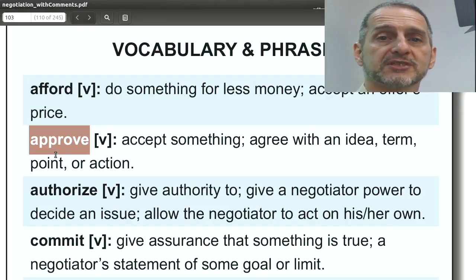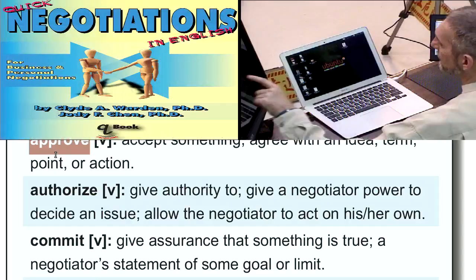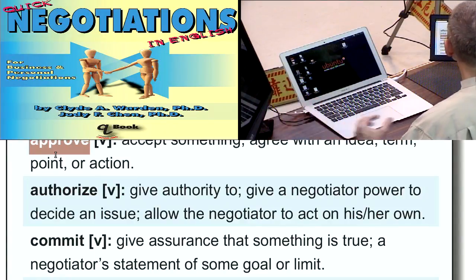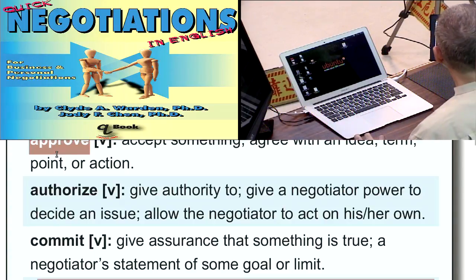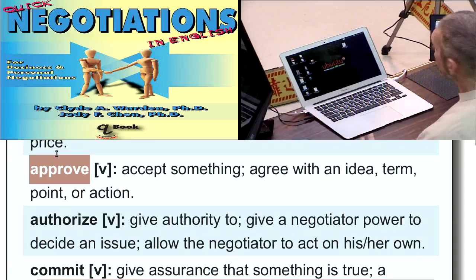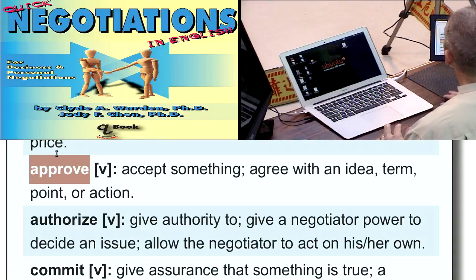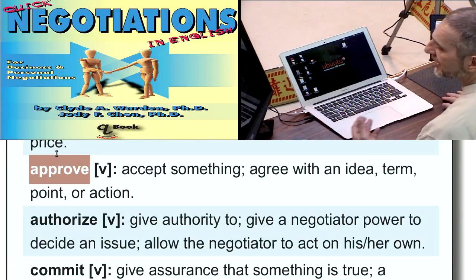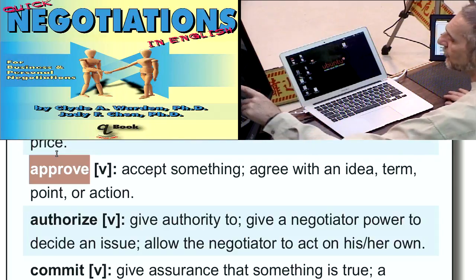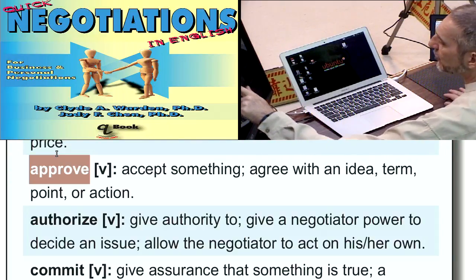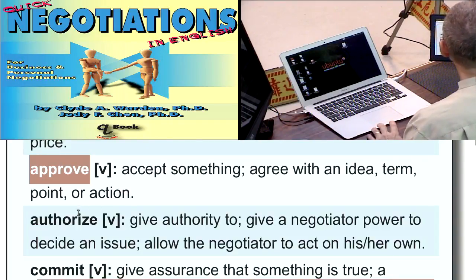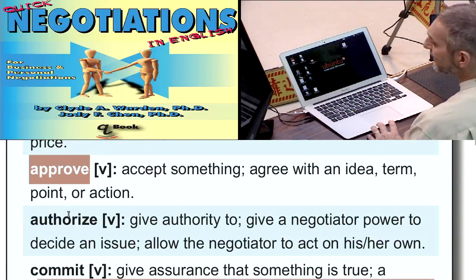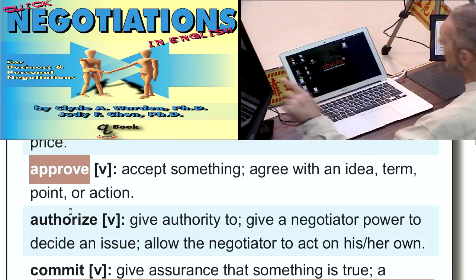Approve. Approve, of course, is something you agree with and something you're going to go along with. You use this in your negotiation to tell the other side that you approve or you don't approve. It's very normal to say we cannot approve, or my manager cannot approve this, or my company cannot approve this, so that it's not personal — it doesn't sound like a personal issue. So approve can be positive, or with 'not approve,' it can be negative.